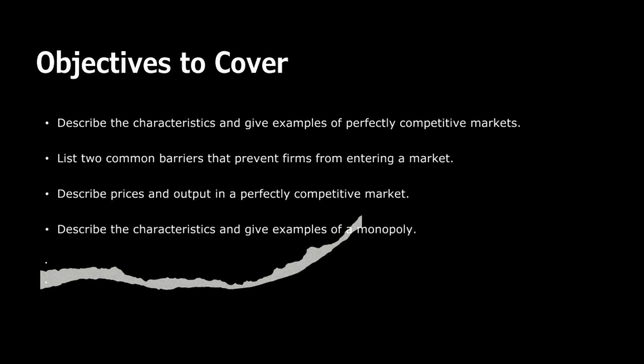A perfectly competitive market is a theoretical model characterized by several key features. Firstly, there are numerous small firms, none of which have the power to influence market prices — they are price takers, not price makers. Examples of such markets include agriculture, where individual farmers grow and sell products like wheat or corn with no ability to set prices.